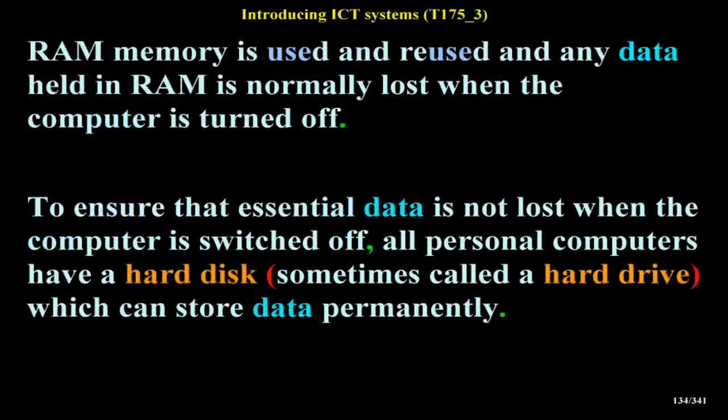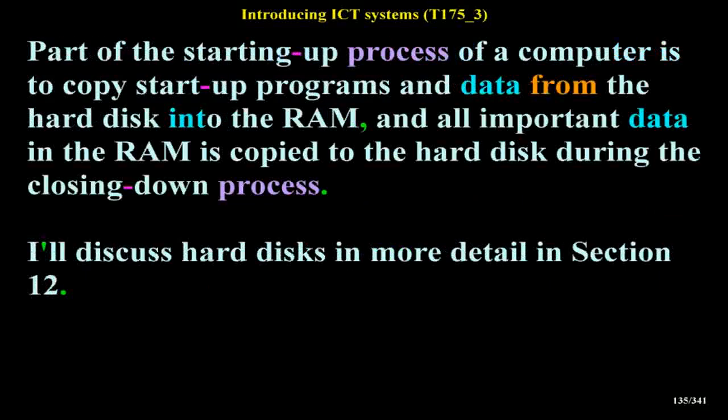RAM memory is used and reused, and any data held in RAM is normally lost when the computer is turned off. To ensure that essential data is not lost when the computer is switched off, all personal computers have a hard disk — sometimes called a hard drive — which can store data permanently. Part of the starting-up process is to copy startup programs and data from the hard disk into the RAM, and all important data in RAM is copied to the hard disk during the closing-down process.